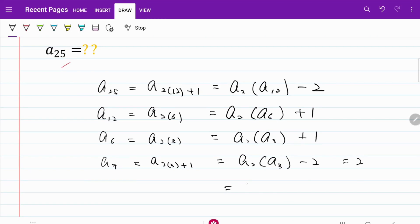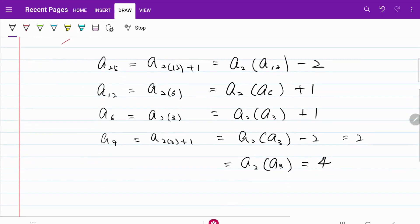From this equation, I know that A2 multiplied by A3 is equal to 2 + 2, which is equal to 4. And I'm going to make use of this to work out our A6, which is equal to A2 multiplied by A3 + 1, which is then equal to 5.